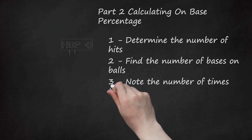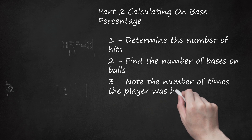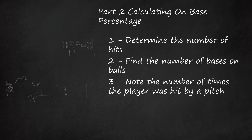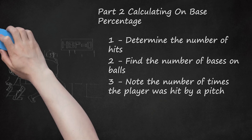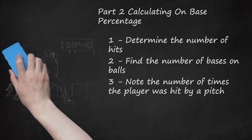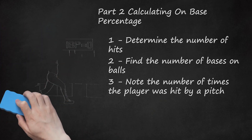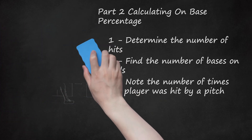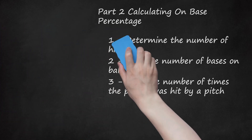Note the number of times the player was hit by a pitch. In addition to hits and bases on balls, you need to know if the player ever reached base because he was hit by a pitch. In the example above, Charles Cobb Blackman did not get hit by a pitch. Therefore, HBP would equal zero.